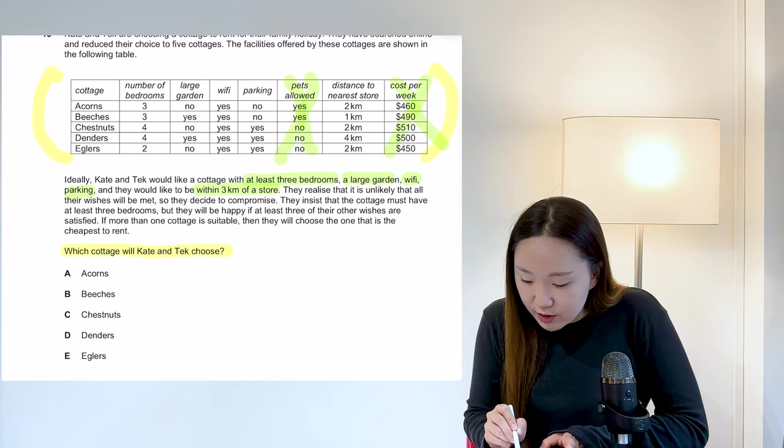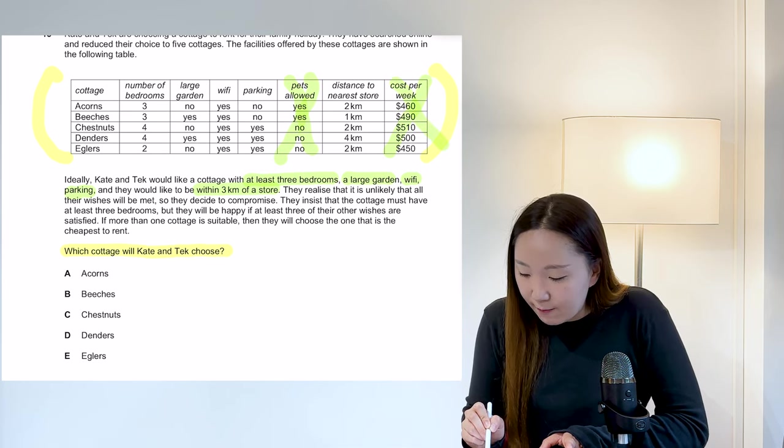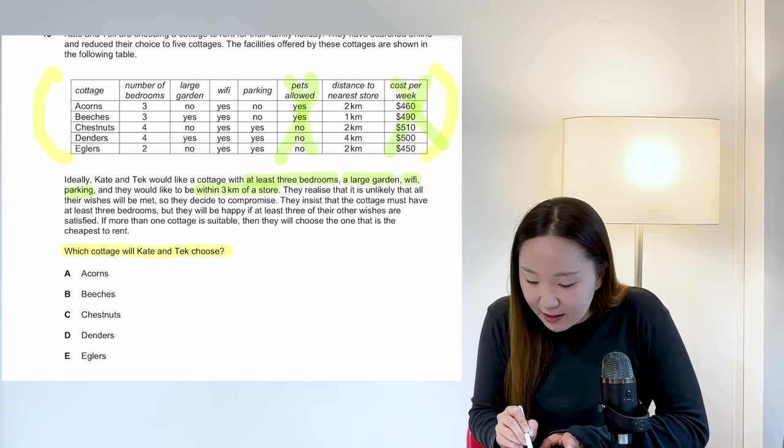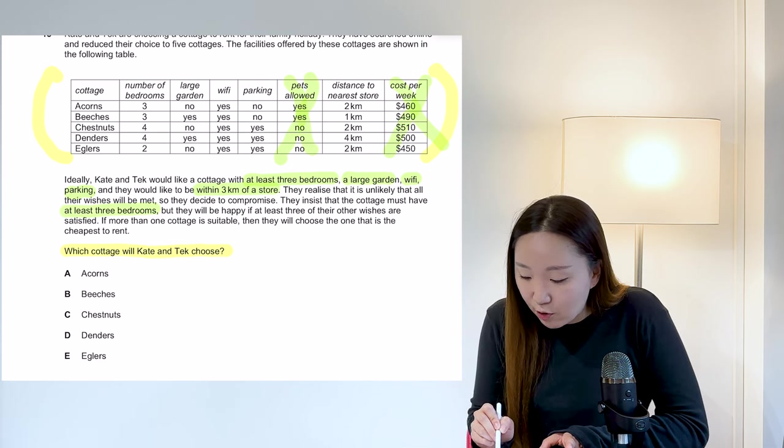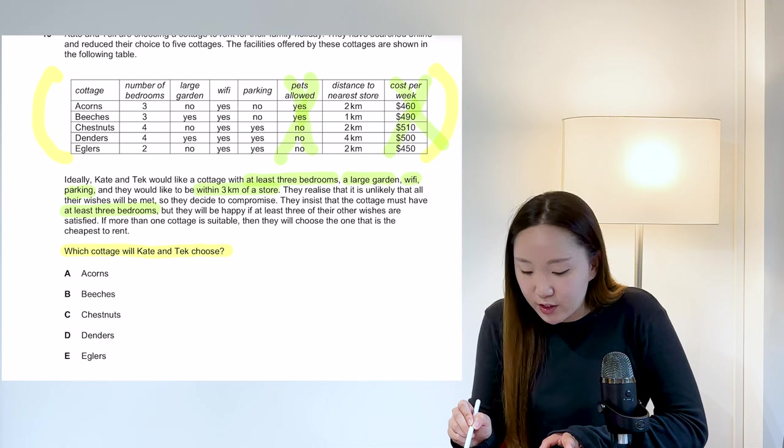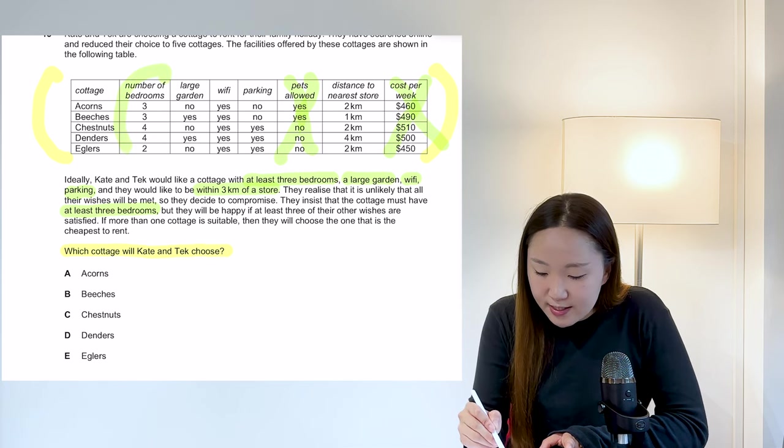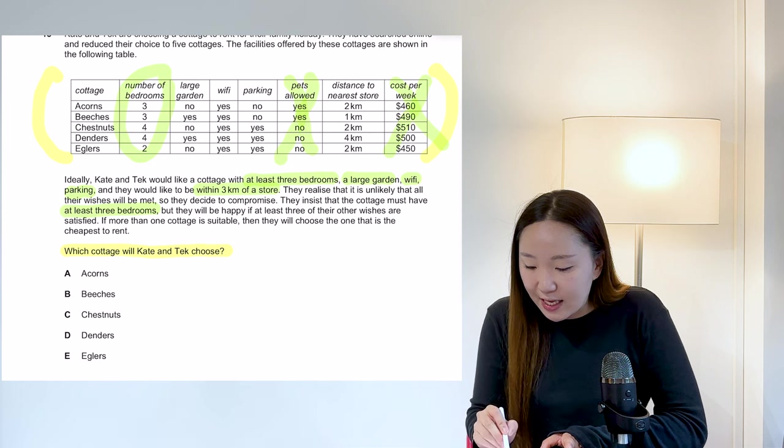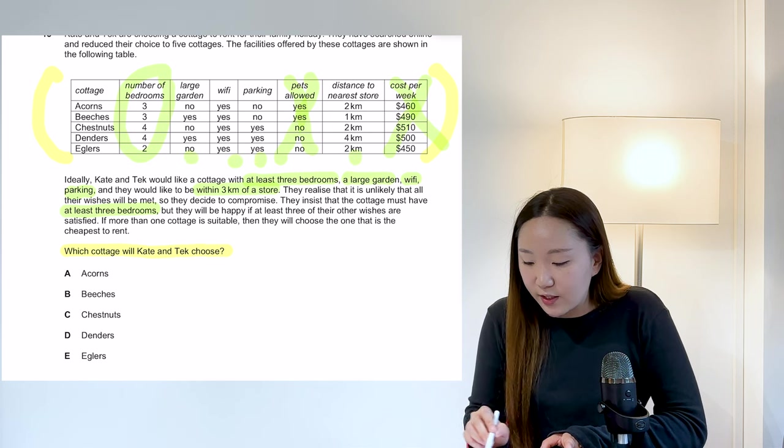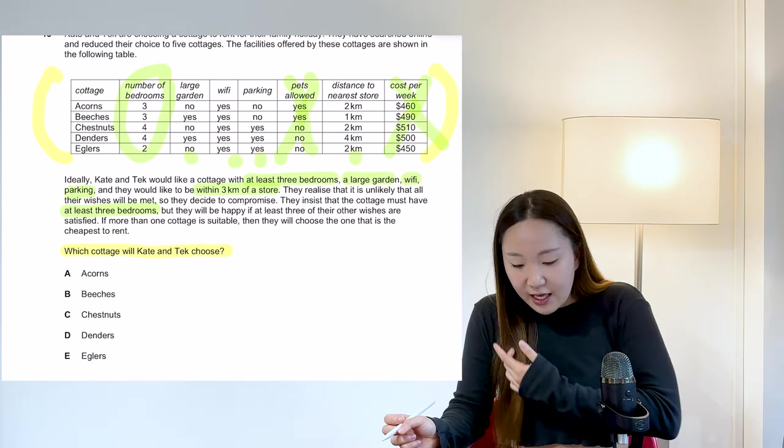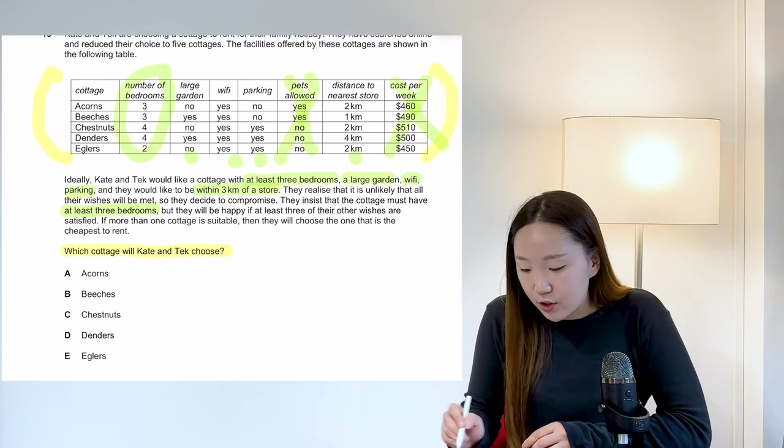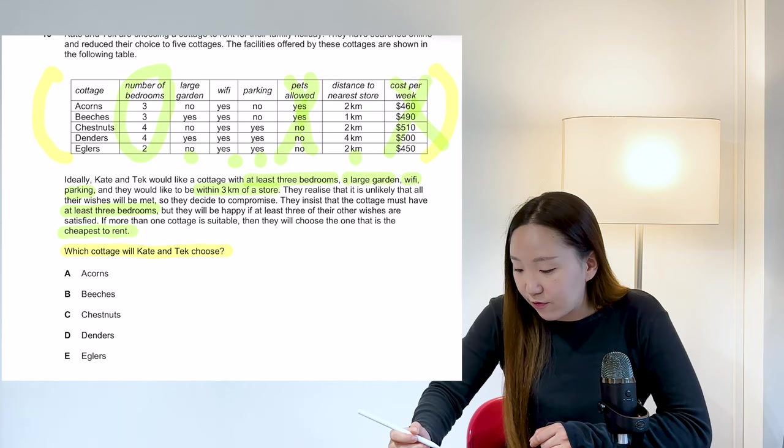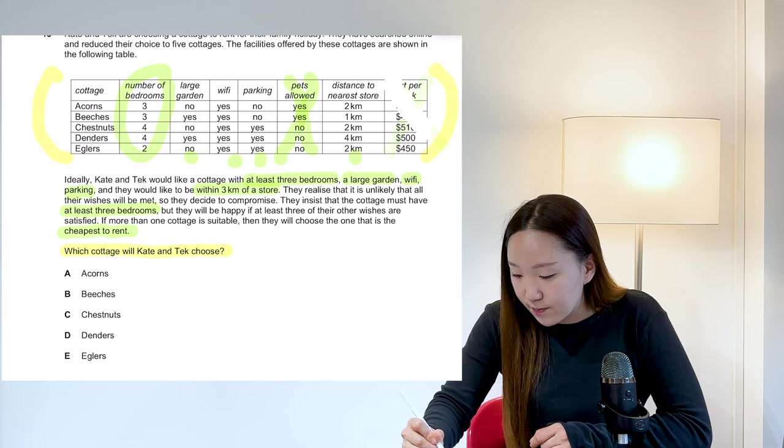They realise that it's unlikely that all wishes will be met. So they decided to compromise. They insist that the cottage must have at least three bedrooms, but they will be happy if at least three of their other wishes are satisfied. So this one is essential, the bedrooms, and then everything else, we just need at least one of these three of the four options. If more than one cottage is suitable, they will choose the one that is the cheapest to rent. So in fact, we actually do care about this cost per week eventually.